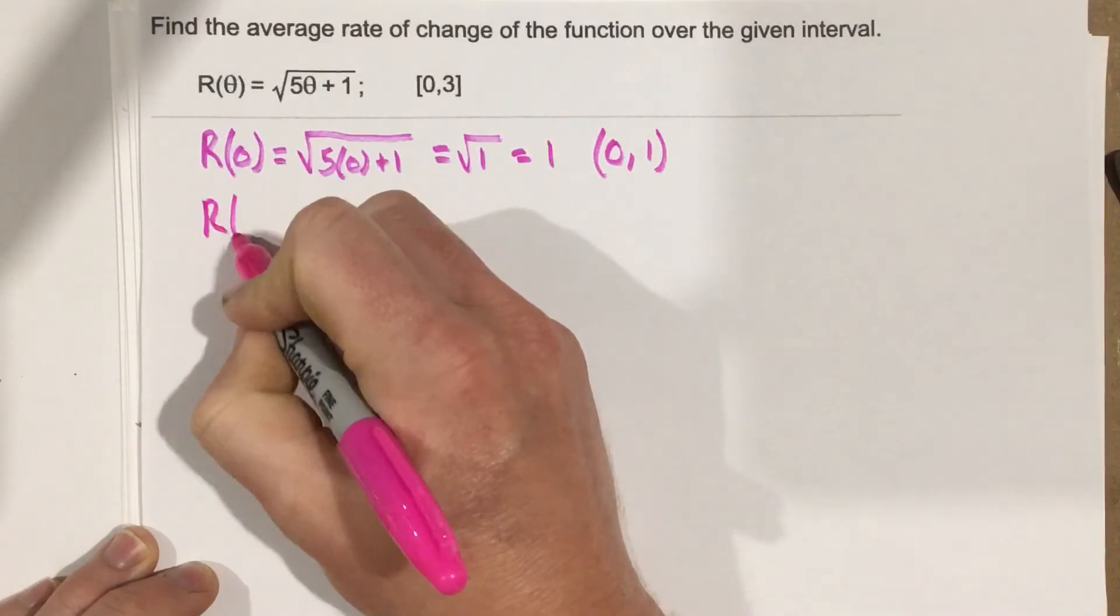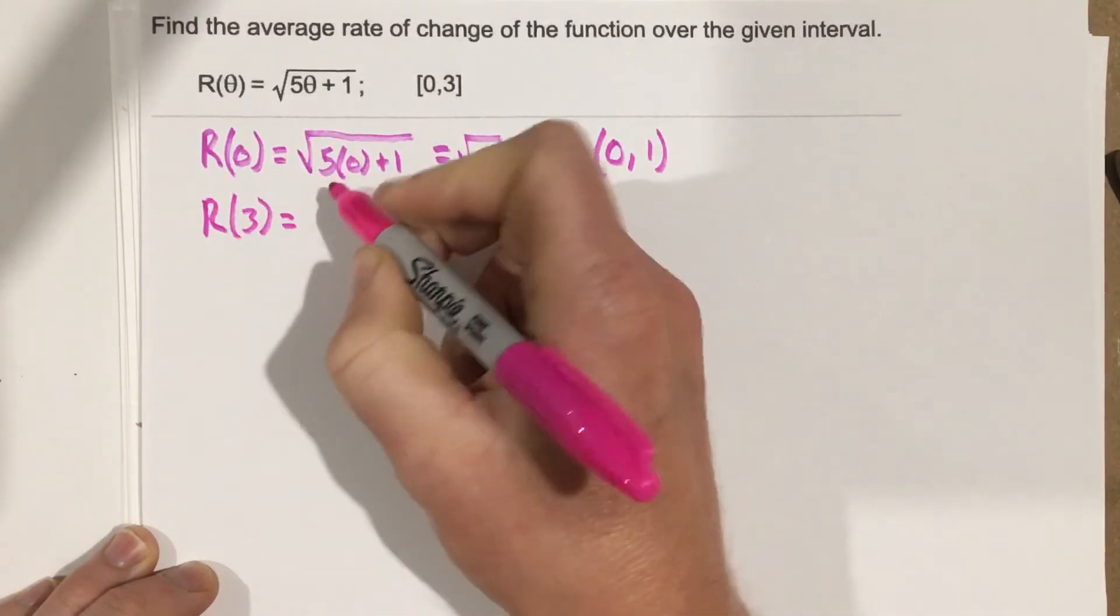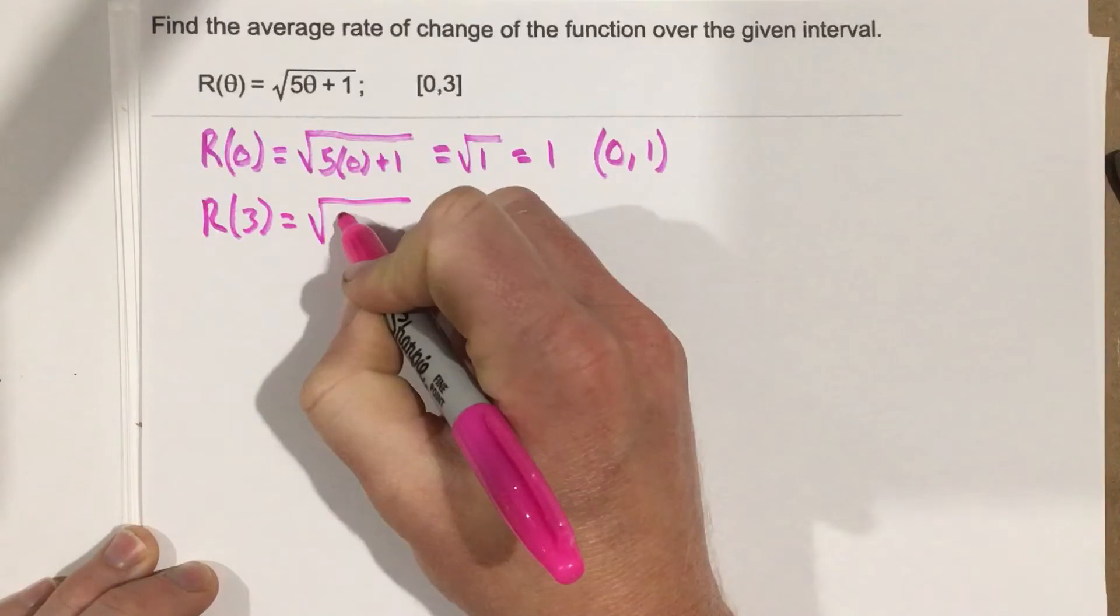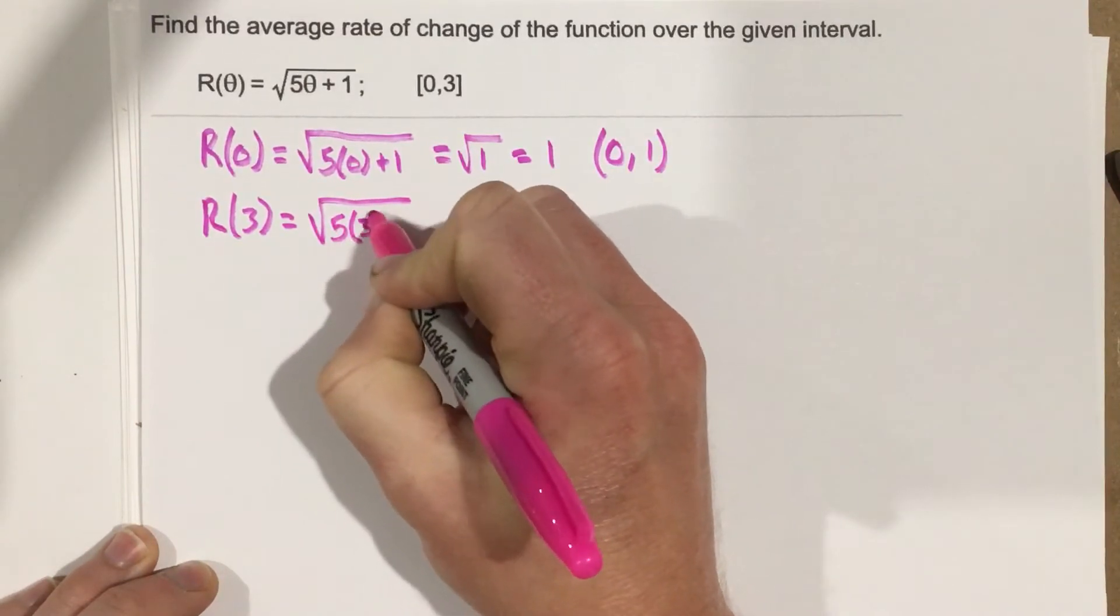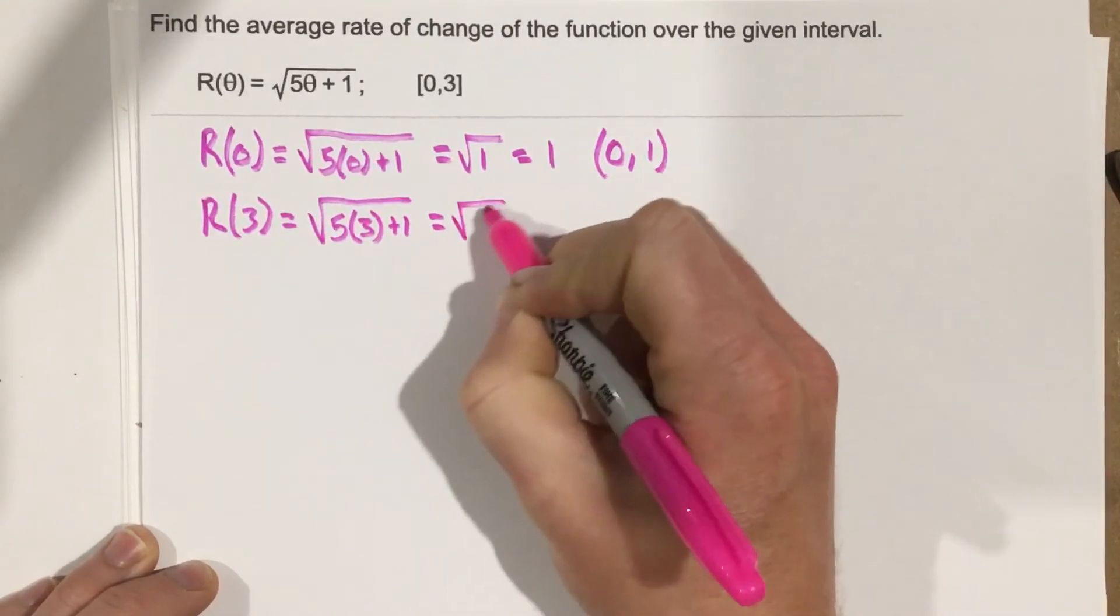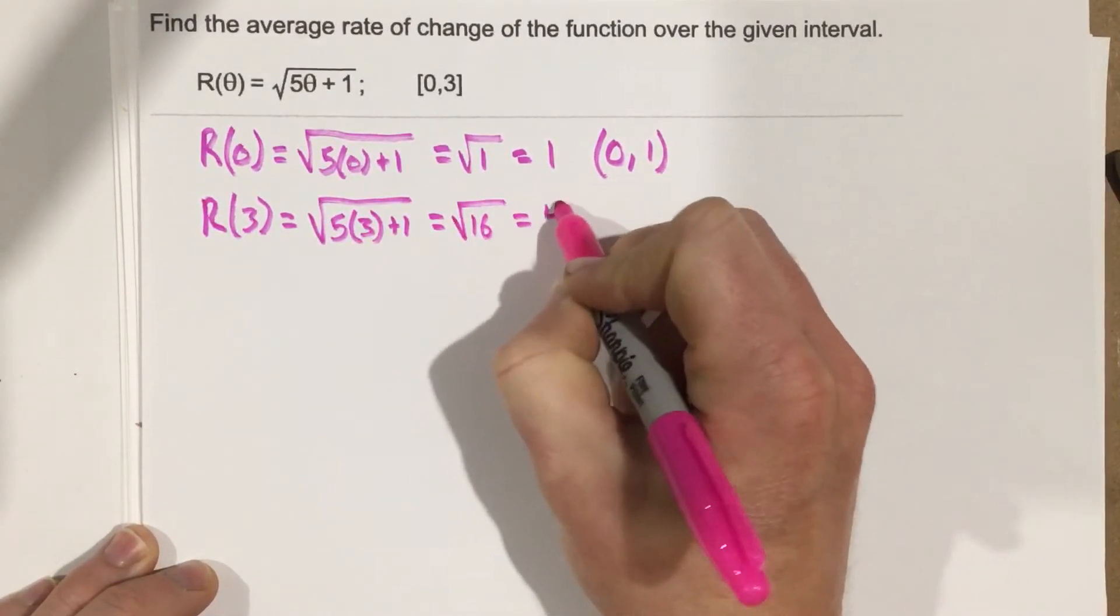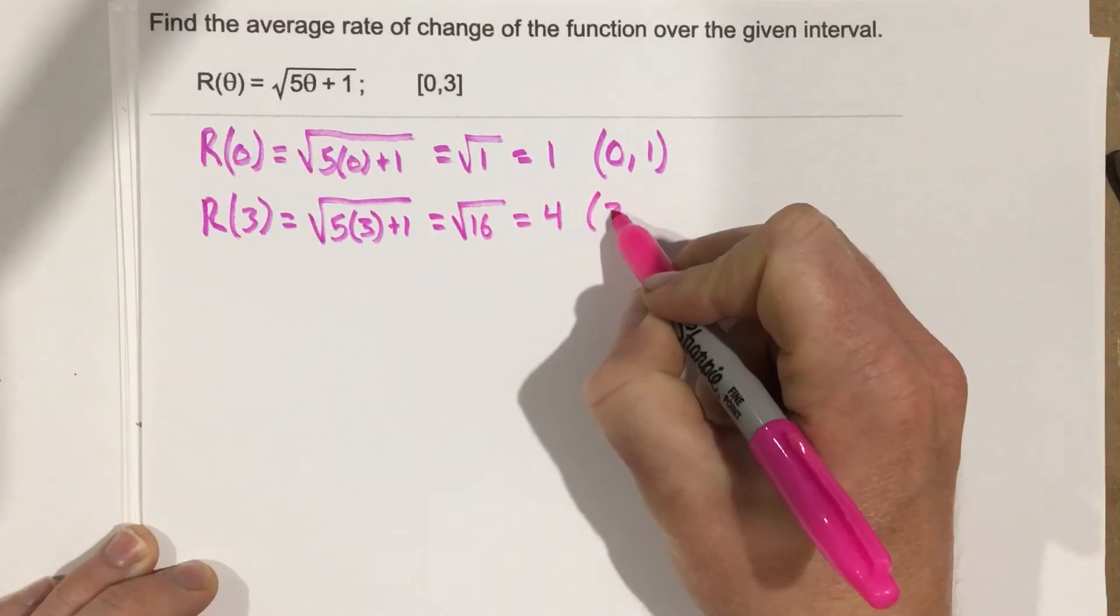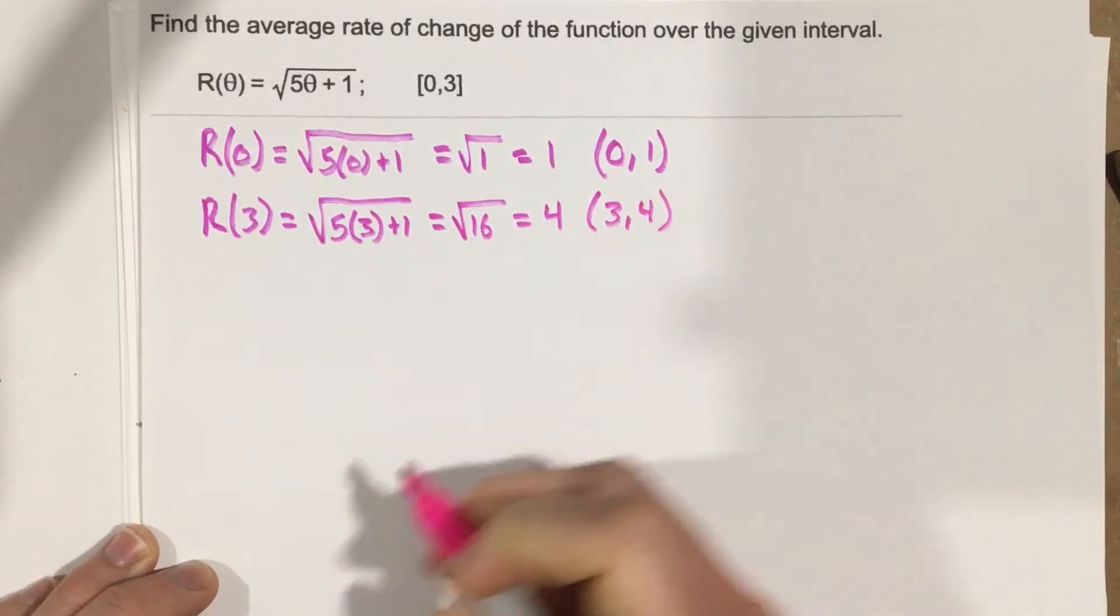Let's do r of 3. Well, you get root 5 times 3 plus 1. This is 15 plus 1, which is 16, so it's root 16, which is 4. So we end up with 3 comma 4 for that coordinate.